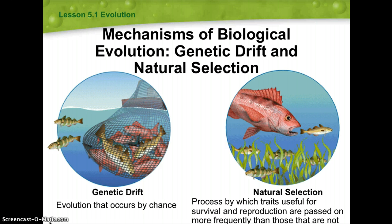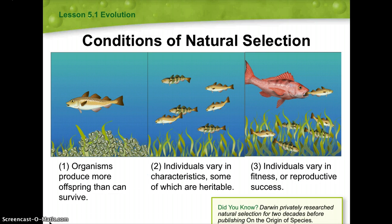A population of organisms can evolve through one of four ways: mutation, migration, genetic drift, and natural selection. As an example of natural selection: organisms produce more offspring than can survive; individuals vary in characteristics, some of which are heritable; and individuals vary in fitness or reproductive success. Darwin privately researched natural selection for two decades before publishing his book.